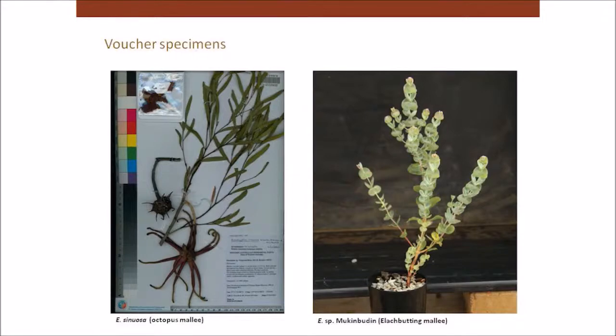That's because eucalypts are dimorphic, which means they have two leaf phases — a juvenile leaf phase and an adult leaf phase — and the juvenile leaf phase is often really useful in discriminating different species. Having herbarium specimens deposited in the various state herbaria around Australia also means that if anybody's doing research on that group of species and the name changes on the specimen, I find out about it and the name can be updated on the tree in the arboretum.